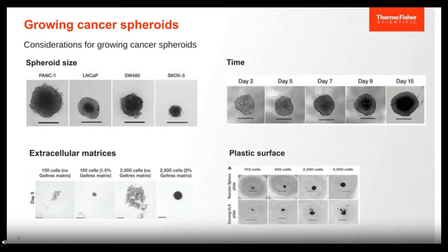Finally, we discuss the plastic surface required. The primary requirement for spheroid formation is a non-adherent surface. Our Nunclon Sphero plates provide that low attachment surface and help prevent the cells from settling to the bottom, facilitating uniform formation after you spin the plate down. This uniform spheroid formation is key to maintaining consistency among your spheroid replicates, which can impact your downstream assay results.